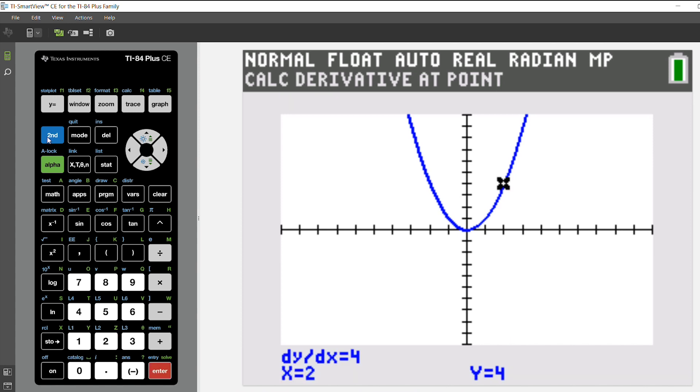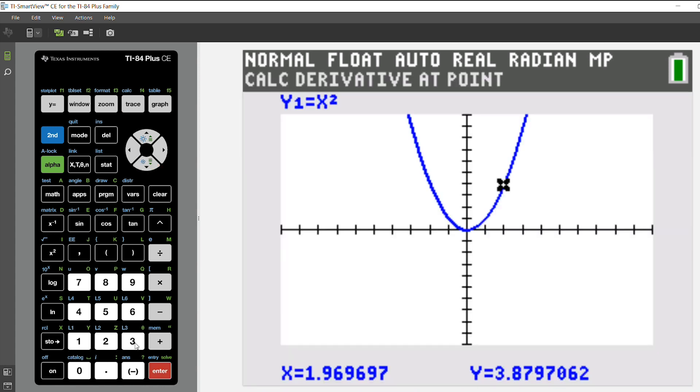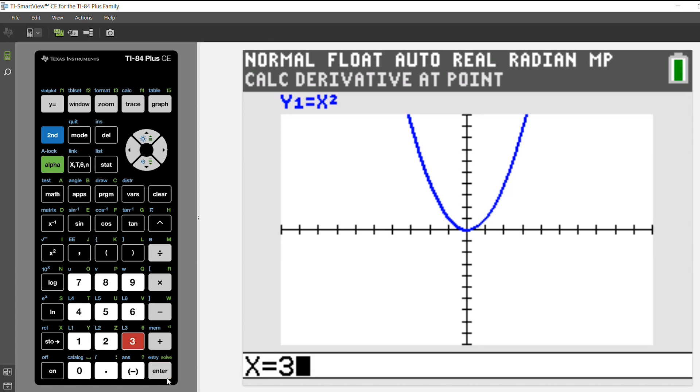You can do that for any other variable. So second trace, if I wanted to do that for 3, you would arrow down again to 6. That gives you the first derivative. Hit enter, insert 3, hit enter again, and it'll tell you that at 3 your derivative is 6.